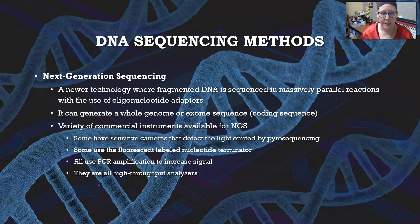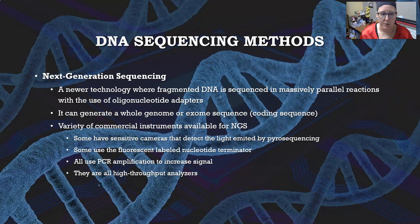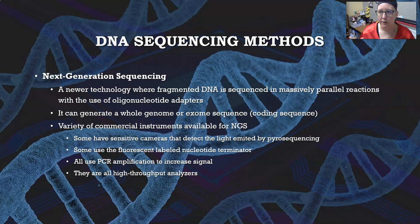Next-gen sequencing is a newer technology where fragmented DNA is sequenced in massively parallel reactions using oligonucleotide adapters. It can generate a whole genome or an exome sequence — the exome being the coding sequences that actually code for protein. A variety of commercial instruments are available; some use sensitive cameras detecting light emitted by pyrosequencing, others use fluorescent-labeled nucleotide terminators as in Sanger sequencing. All use PCR amplification to increase signal and are high-throughput analyzers, meaning they can sequence a whole genome quickly — whereas it once took 10 years to sequence a human genome the first time, now results come back in a couple of weeks.